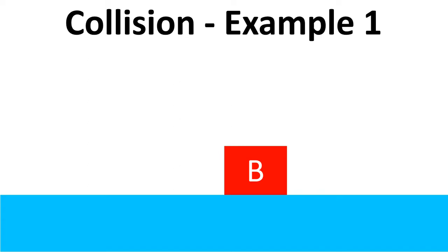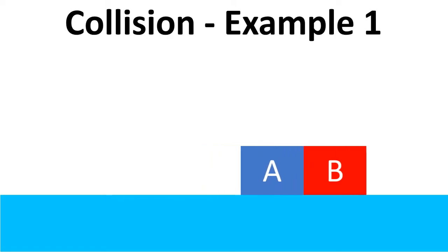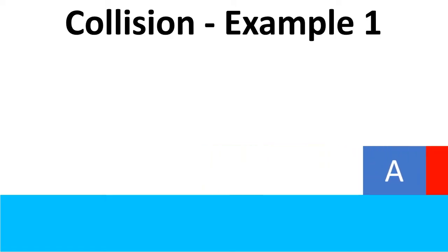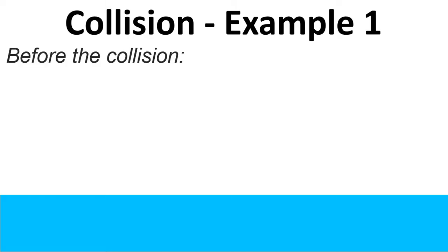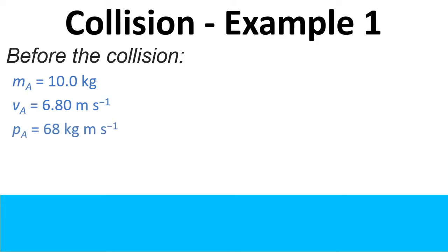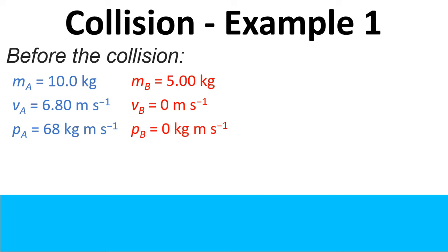I'm going to go through a couple of examples now. In the first example, block A comes in and bumps into block B, which is stationary, and then they stick together and move off together. Before the collision, block A has a mass of 10 kilograms and a velocity of 6.8 meters per second, giving a momentum of 68 kilogram meters per second. Block B has a mass of 5 kilograms and a velocity of 0 meters per second, so it has a momentum of 0 kilogram meters per second.